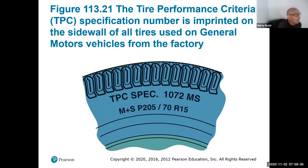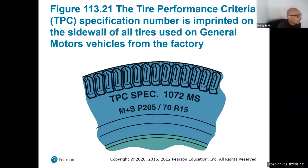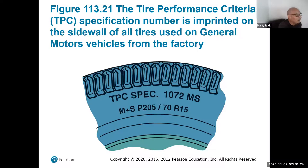Tires always have performance criteria and specifications on them, and you're going to get all kinds of different numbers. The best thing to do is look at what type of tire you have by size. On this particular one, it actually has an M — I think that's for mud and snow. So this is going to be for off-road type applications as well.